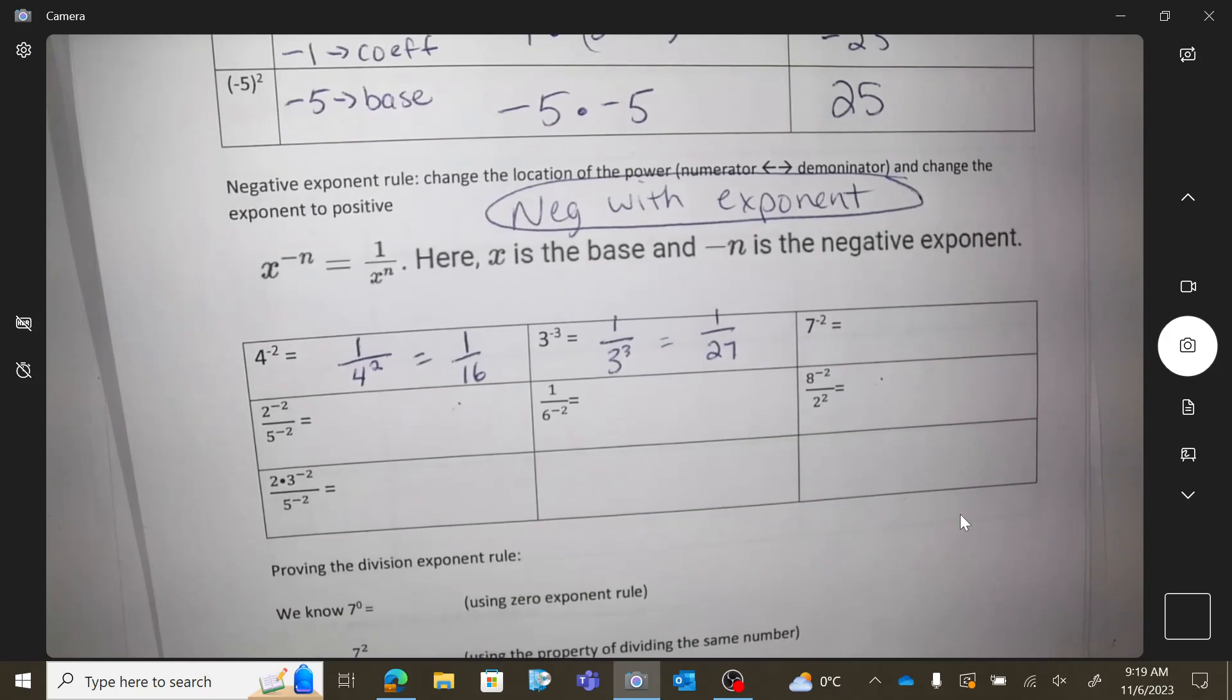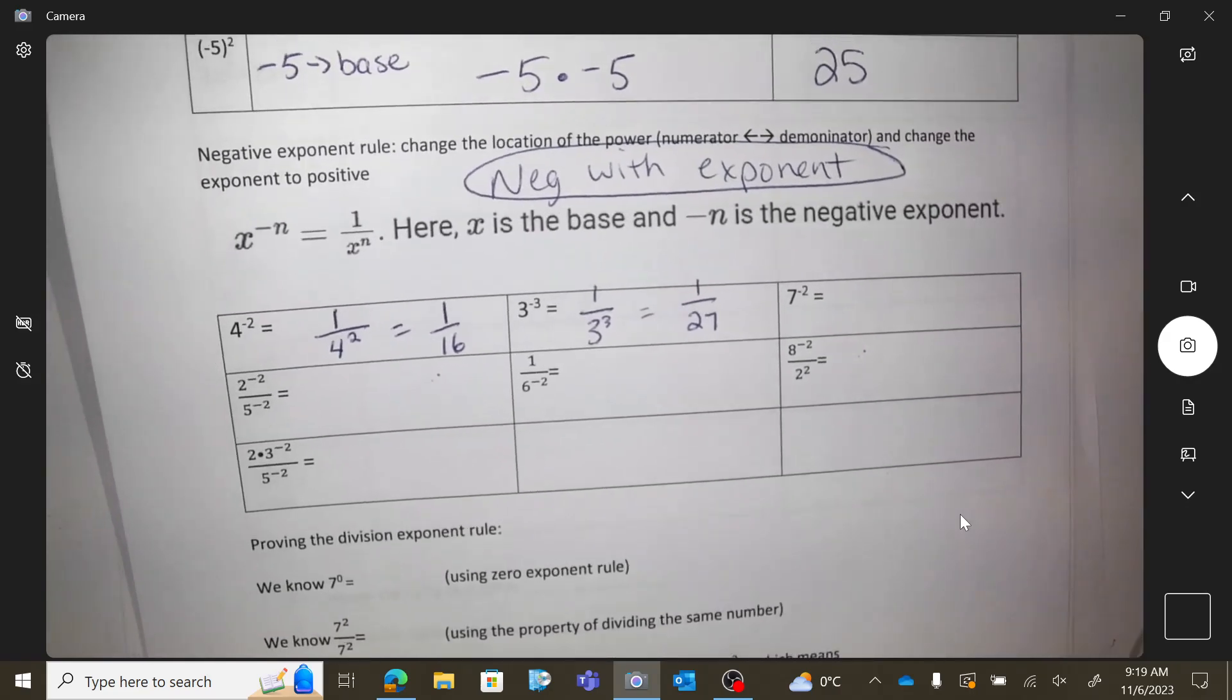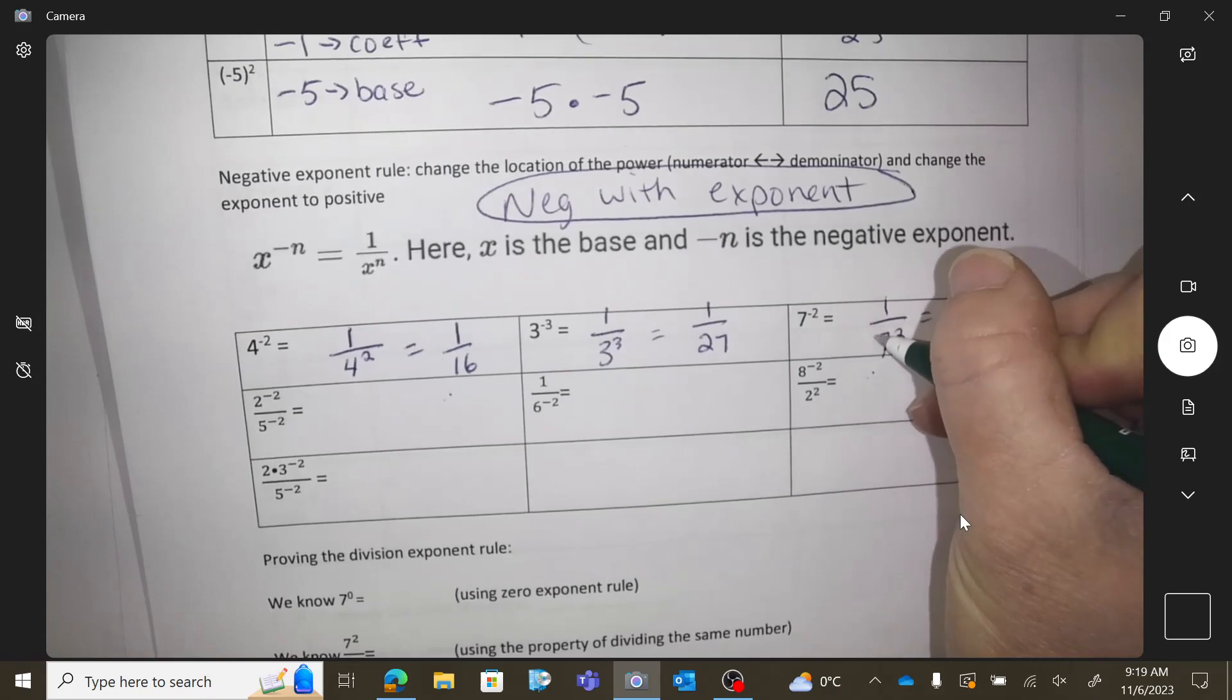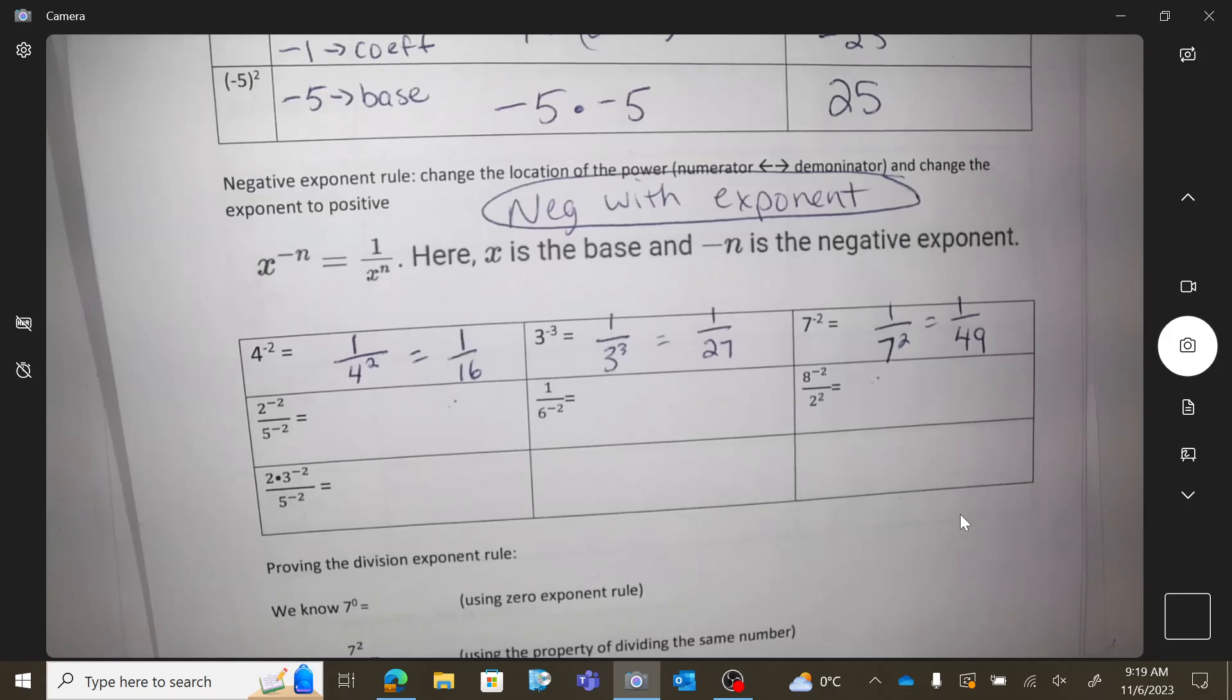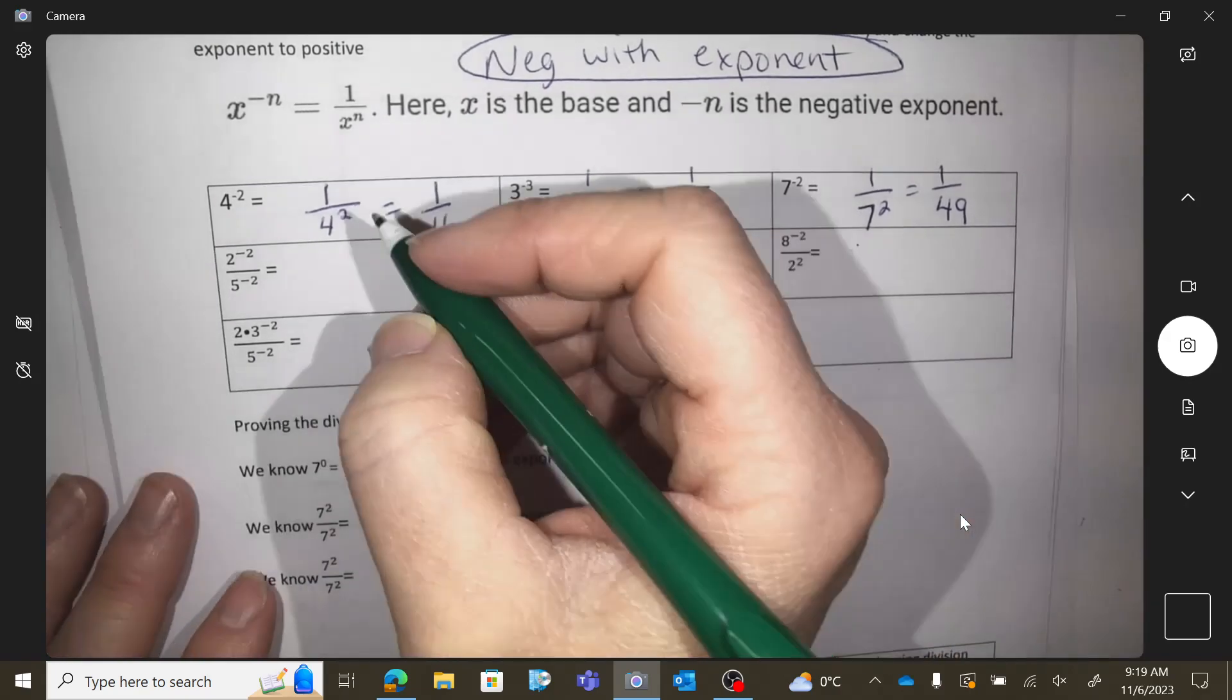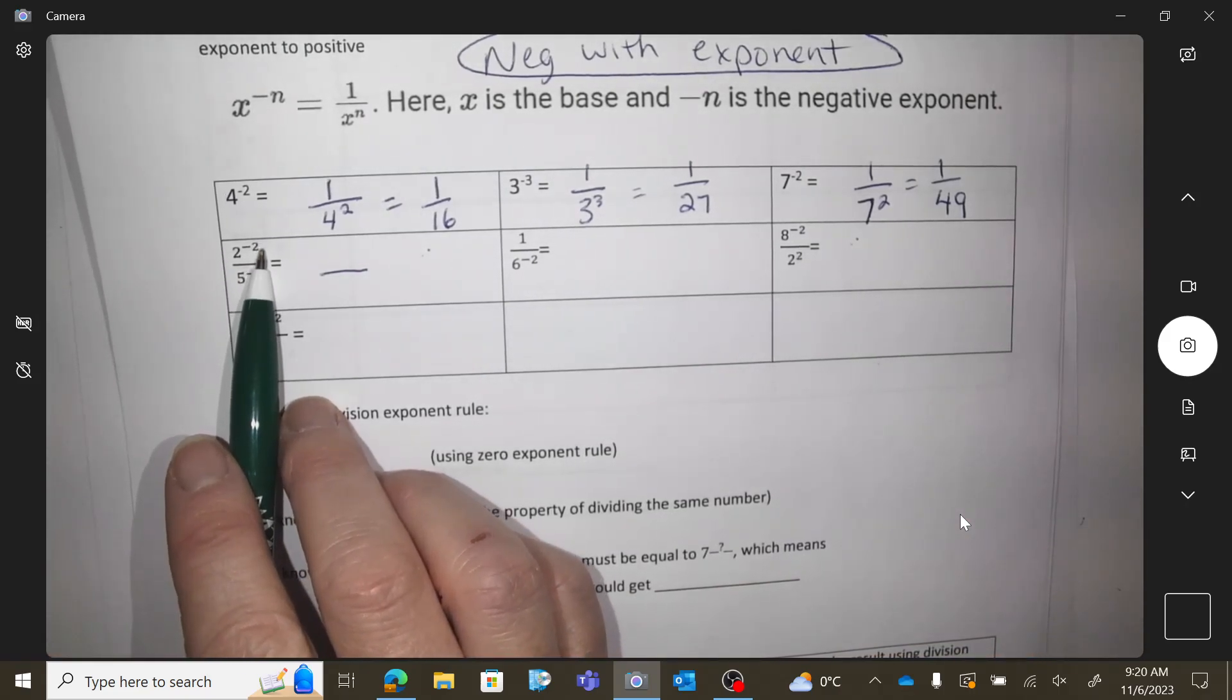Okay, get me the next answer on your own. Okay, so 1 over 49. Next one. So here's my fraction. 2 to a negative 2, that's got a negative with it, so it's going to have to move. So it's going to go to the bottom.